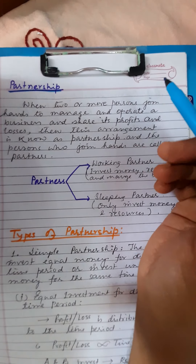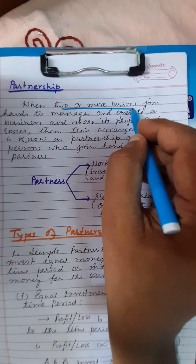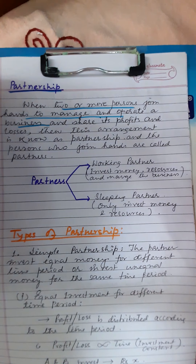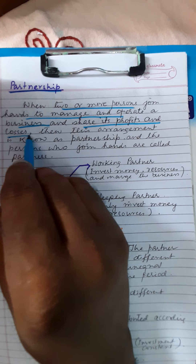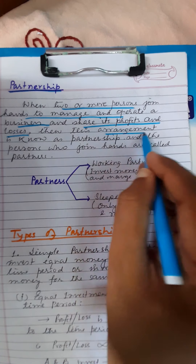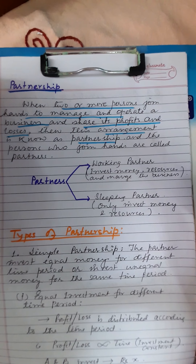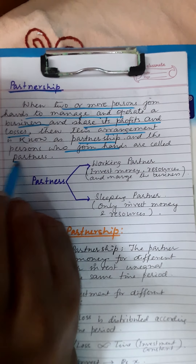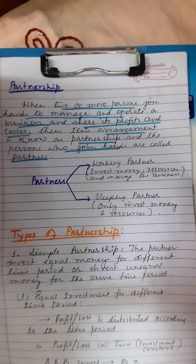What is partnership? When two or more persons join hands to arrange, manage, and operate a business, and share its profits and losses among themselves, this arrangement is called partnership. The persons who join hands to operate the business are called partners.